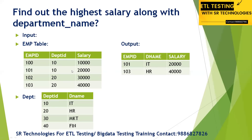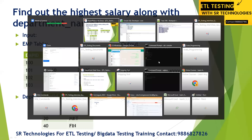The department name is present in the department table, and salary and employee data are in the employee table — so two tables are involved. If it were a single table, we could simply use GROUP BY department ID. Now let me explain how we can achieve this with two tables.